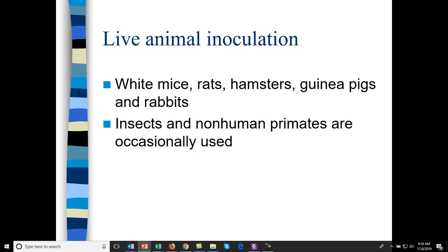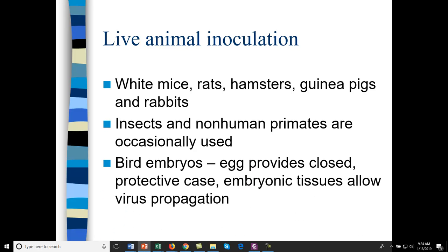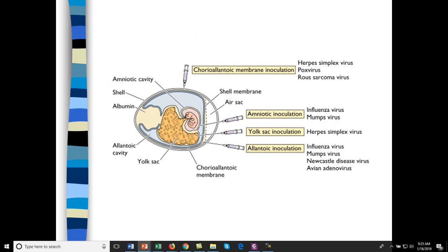Occasionally insects are used — the insect immune system is very different from the human immune system, so it's not good for producing antibodies, but if you want to produce a lot of viruses you can use an insect cell. Sometimes non-human primates are used, but only very rarely. For production of vaccines, especially flu vaccines, bird embryos are used. The egg itself provides a protective case, and different portions of the embryo and its fluids and compartments are good for viral propagation.